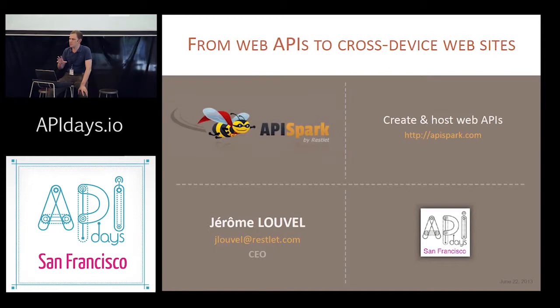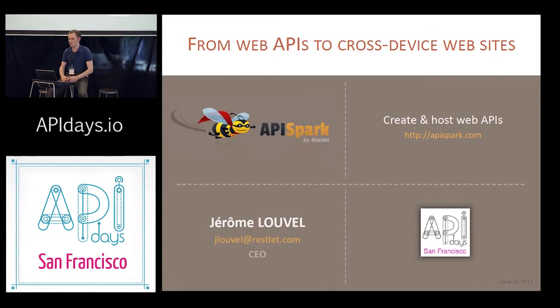API Spark is an all-in-one platform that lets you create, host, and manage your web APIs, all from a simple web browser, so you don't have to code. Everything is taken care for you.